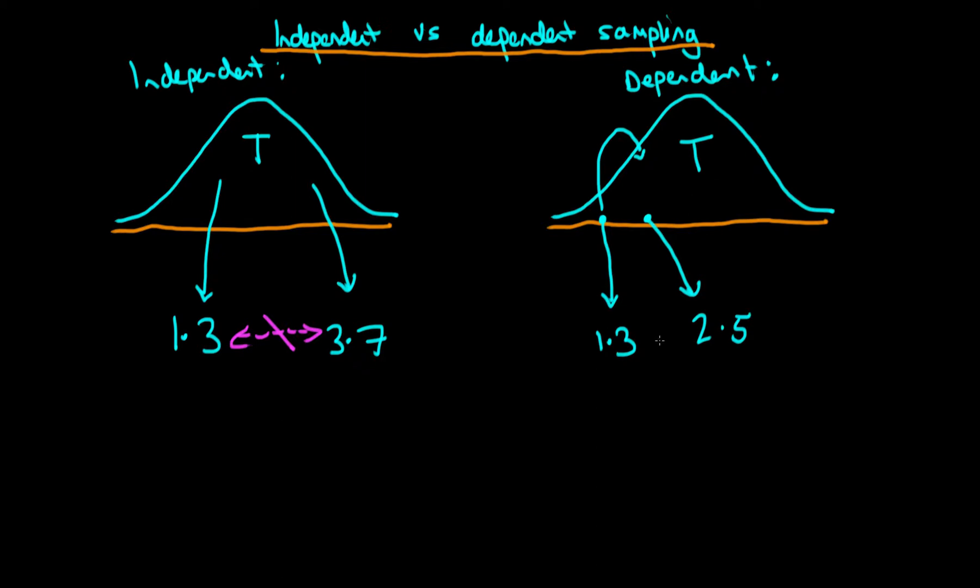The idea with dependent sampling is that because we're using this first sample to generate our second one, there is actually a link between these two samples which is not just due to the fact that they're coming from the same distribution T.